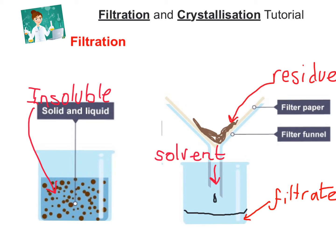However, any large chunks of insoluble solid — substances that do not dissolve — can't pass through those little holes in the filter paper. They're too big, so they are stopped and get left behind on the filter paper. When they are left behind, that's called the residue. And that is filtration — how we can separate an insoluble solid from its liquid.